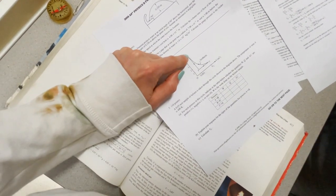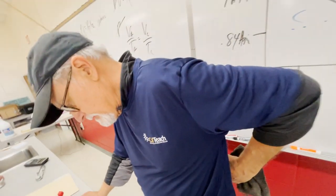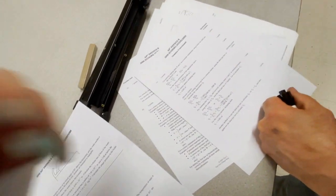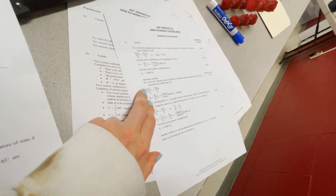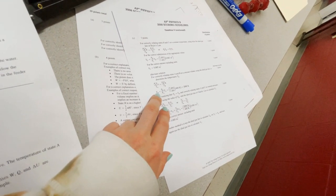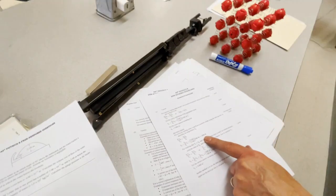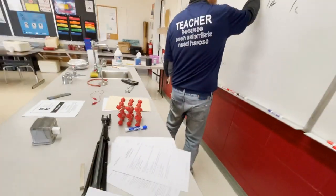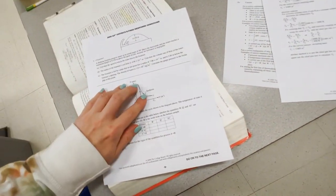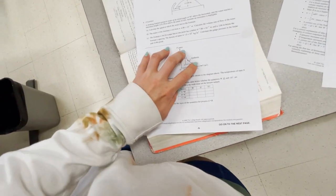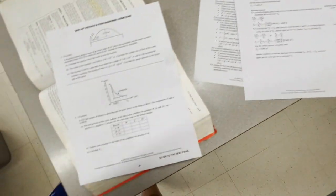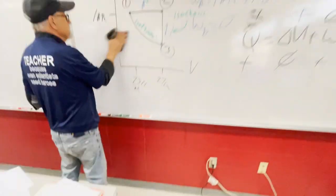The key insight: we should use state B (not A) to find volume at C, because B and C share the same isotherm — same temperature. So T cancels and we get P_B·V_B = P_C·V_C. The student's instincts were right throughout the problem-solving process.